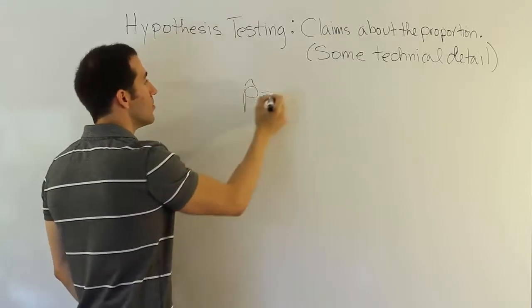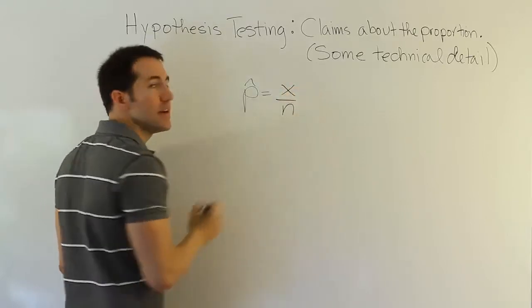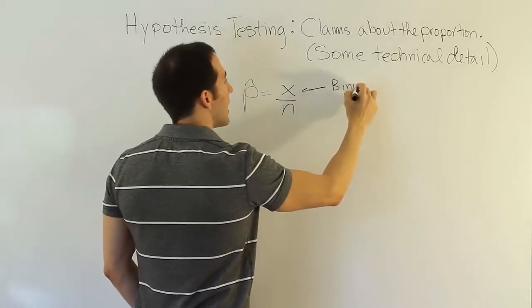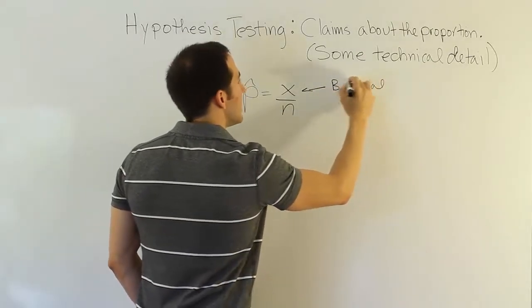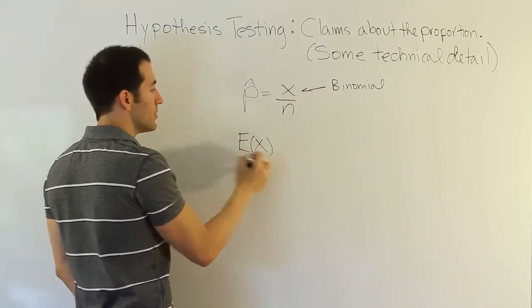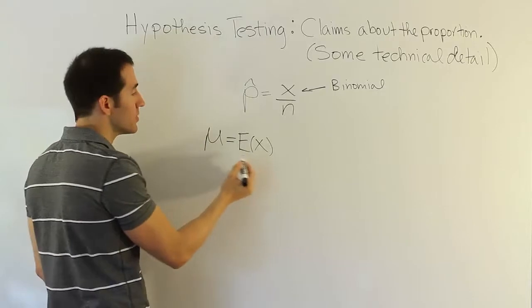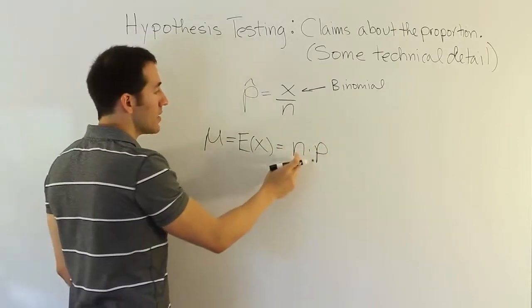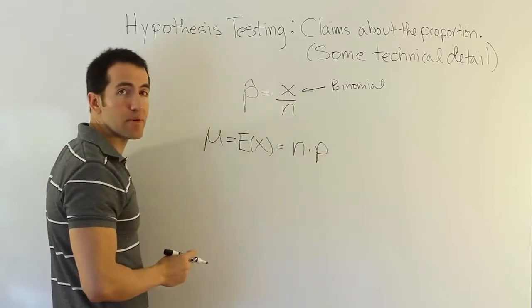How do we know what its mean is? So p-hat, remember, was x over n, and we said that x was binomial in nature. We actually learned that the expected value for the binomial distribution, which is the same as the mean value for binomial distribution, was n times p earlier in the course, where n is the number of trials, p is the probability of success.